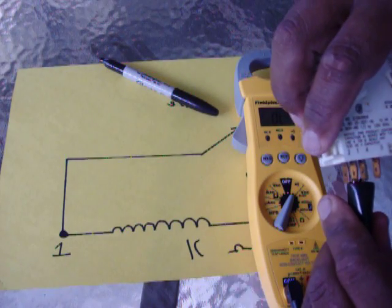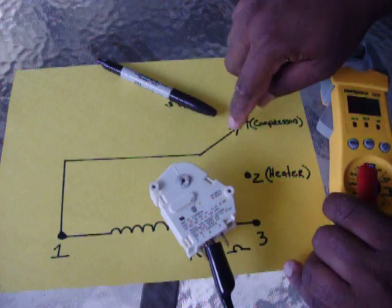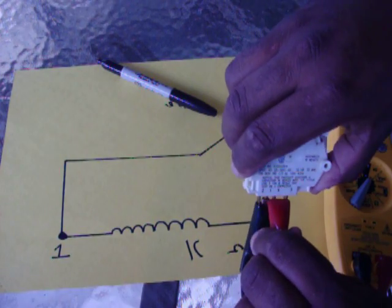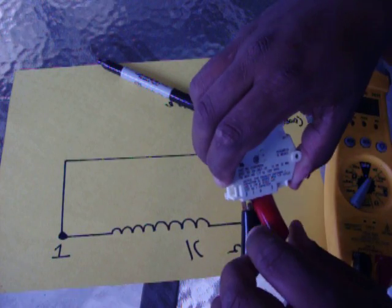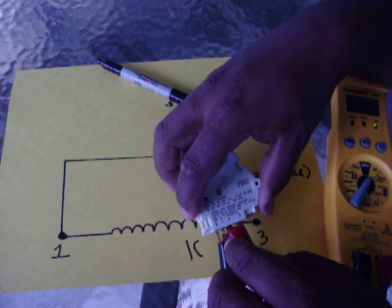I'm going to check from one. Again, we're checking from one to four, to four. Let's see here. So from one to four, it's good.